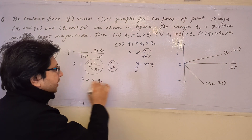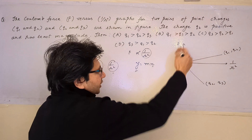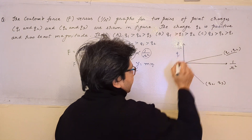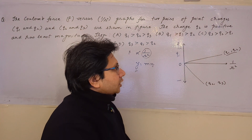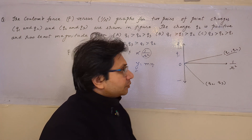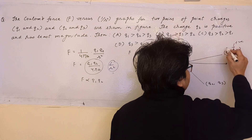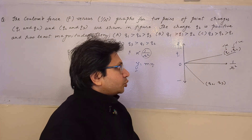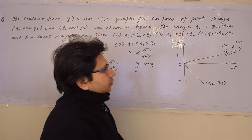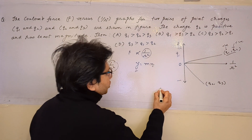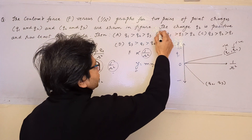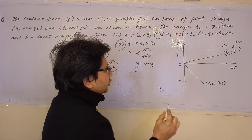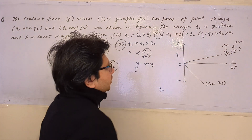Analyzing the graph, for the pair q1 and q2, F is in the first quadrant — F is positive. Positive F means a repulsive force, which is only possible when charges are of like nature. Since q2 is given as positive, q1 must also be positive. Also, since q2 has the least magnitude, the only valid options are (b) or (d), so we can discard options (a) and (c).